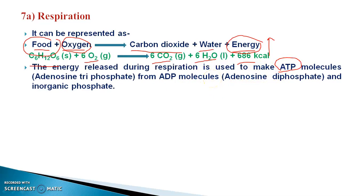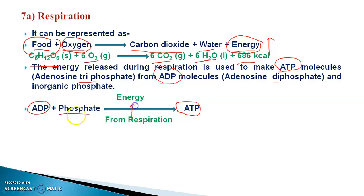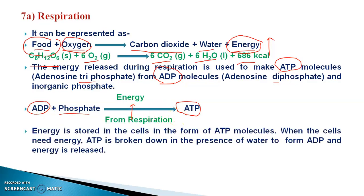How does it convert into ATP? Because this energy is not ATP at that moment — it is in the form of ADP, adenosine diphosphate, which has two phosphate molecules. Triphosphate has three phosphate molecules. This ADP combines with inorganic phosphate to convert into the end product, ATP. The energy coming from cellular respiration helps to make ATP. At this moment, this ATP stores energy in the cell.